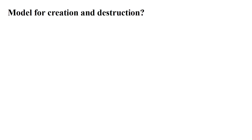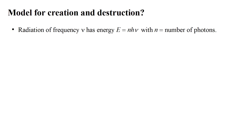Now, we turn to the question of how to rigorously represent the creation and destruction of particles. At first we'll focus on photons, but we'll hold out hope that we'll find a concept that extends to electrons and positrons also. An electromagnetic field oscillating at frequency nu has energy n h nu, where h is Planck's constant and n is the number of energy quanta, or photons.